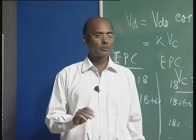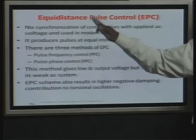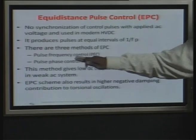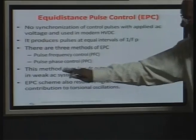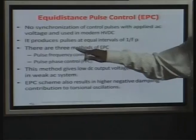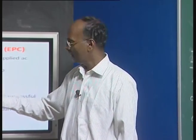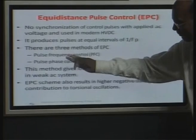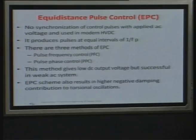There are three methods; basically there is a modification called pulse period control, which is similar to the other schemes. I am going to discuss only the two commonly used methods for equidistant pulse control: pulse frequency control (PFC) and pulse phase control (PPC). The third, pulse period control, is a slight modification and I will not discuss it.